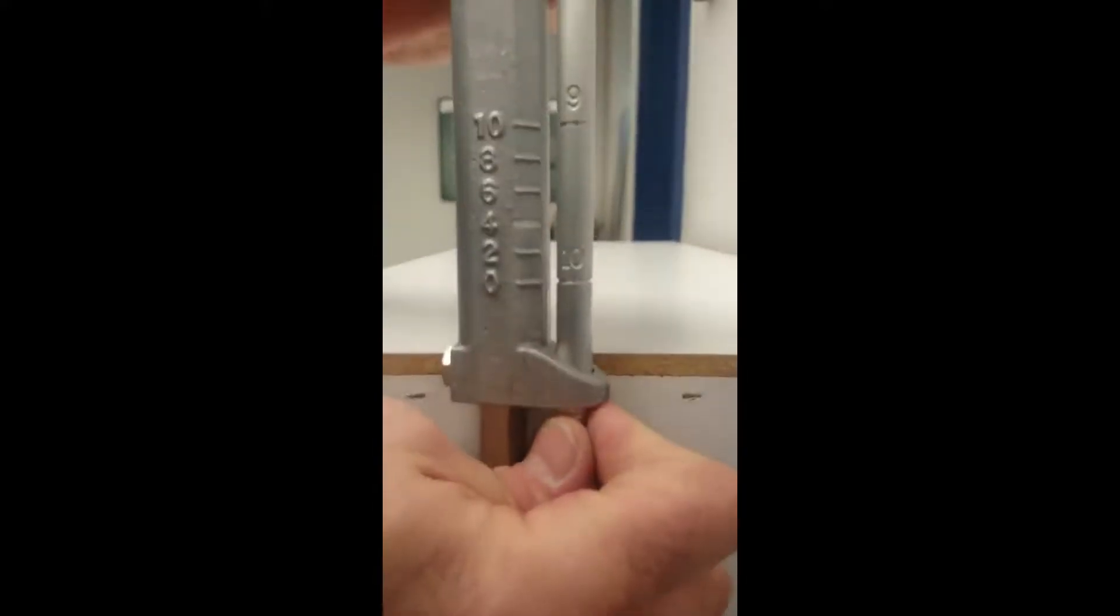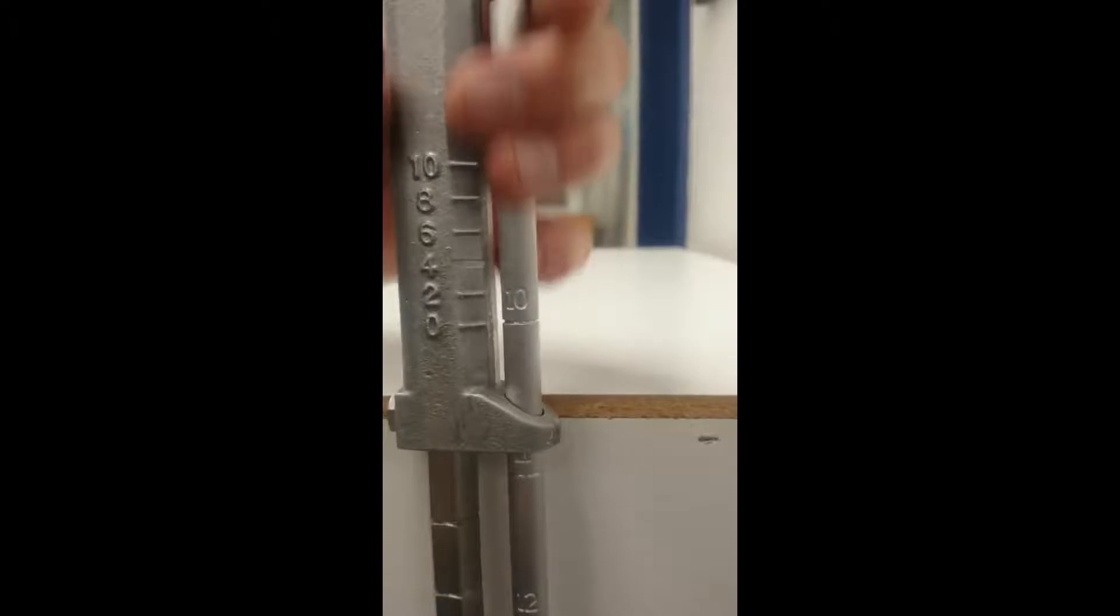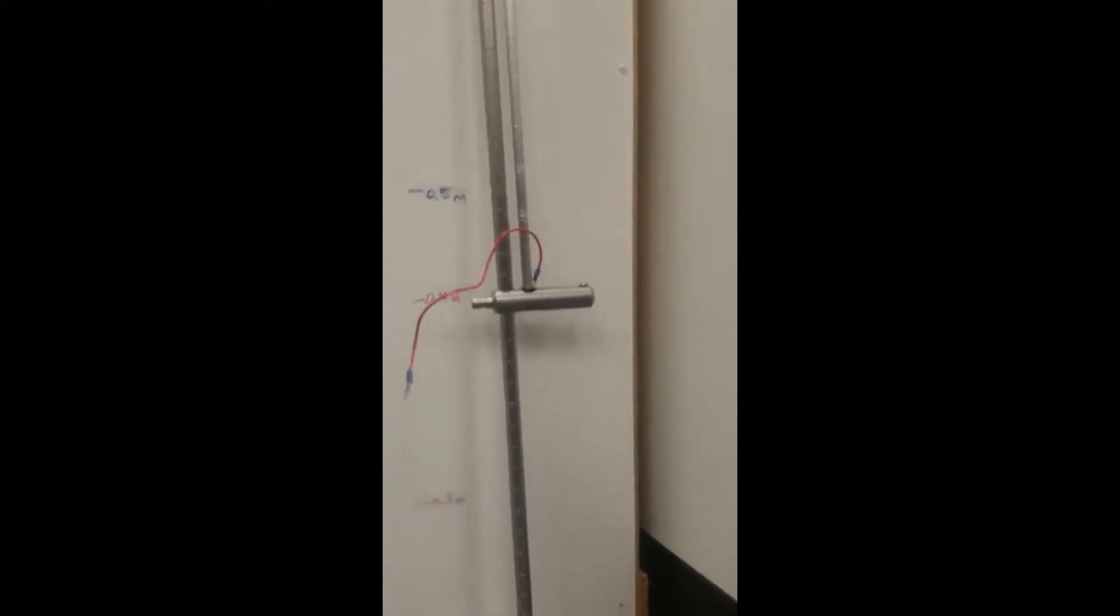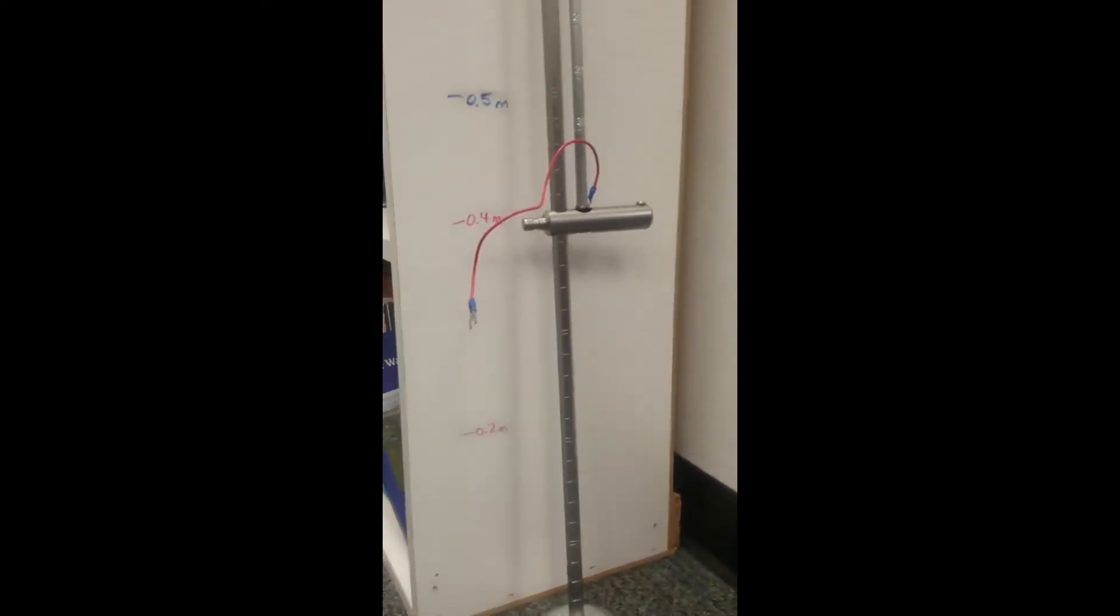And so that represents now 40% of 100 centimeters, and we look down at where our sensor position would be, and it's exactly there. That's 40 centimeters, or .4 meters off the bottom. Excellent.